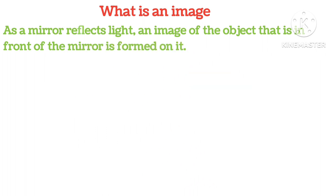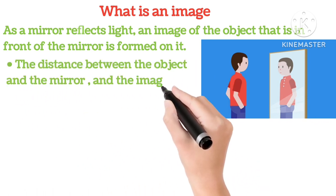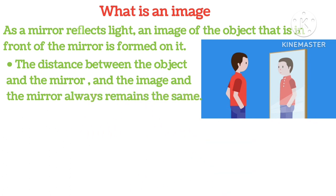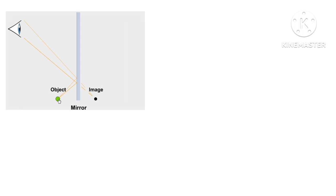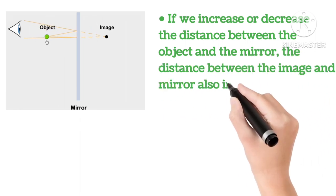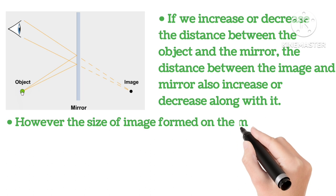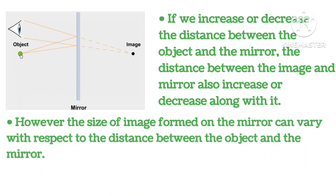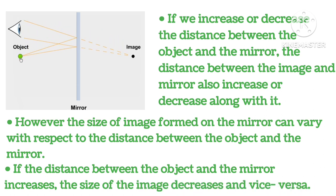What is an image? As the mirror reflects light, an image of the object that is in front of the mirror is formed on it. The distance between the object and the mirror and the image and the mirror always remains the same, as you can see in the picture — there is equal distance between both of them. If we increase or decrease the distance between the object and the mirror, the distance between the image and the mirror also increases and decreases along with it. However, the size of the image formed on the mirror can vary with respect to the distance. If the distance between the object and the mirror increases, the size of the image decreases and vice versa.